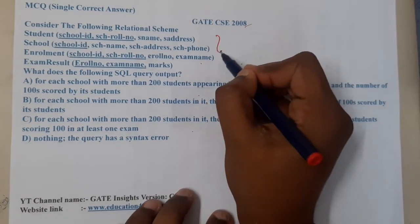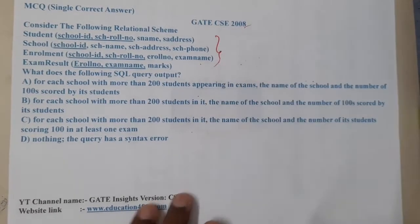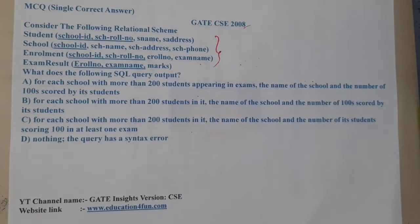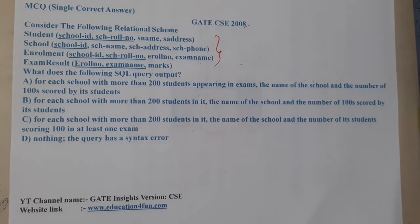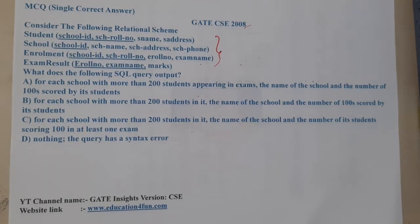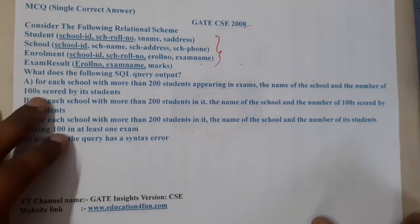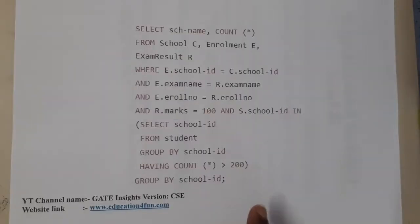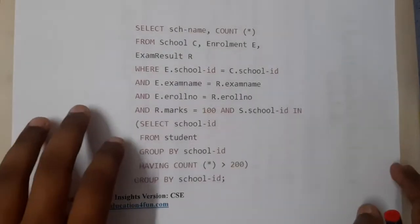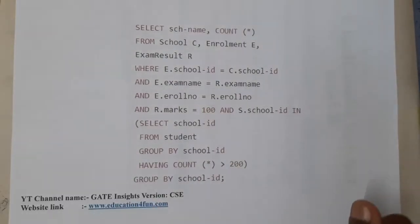They give four tables here, and they have underlined the primary keys. They are asking what will be the output of the given query. The query appears on the next page — and yes, it is really a huge query.